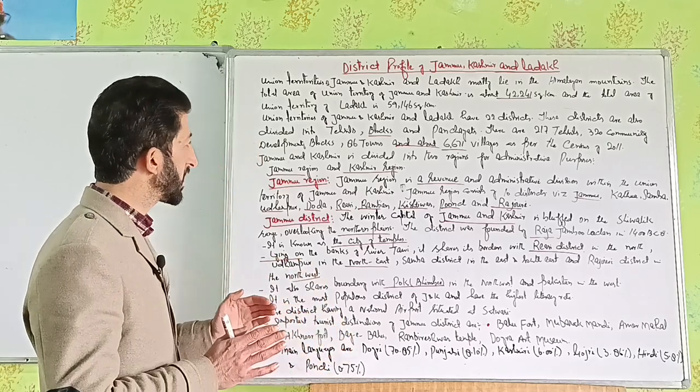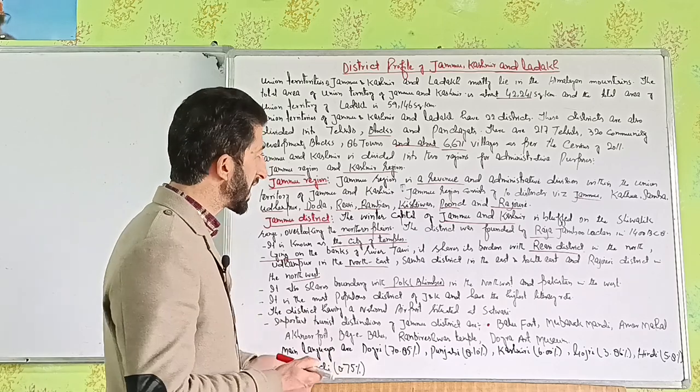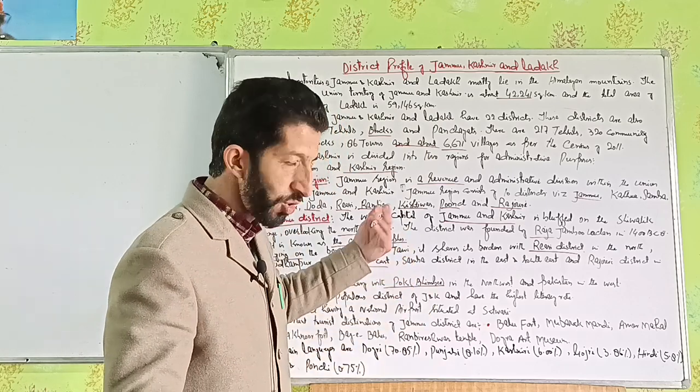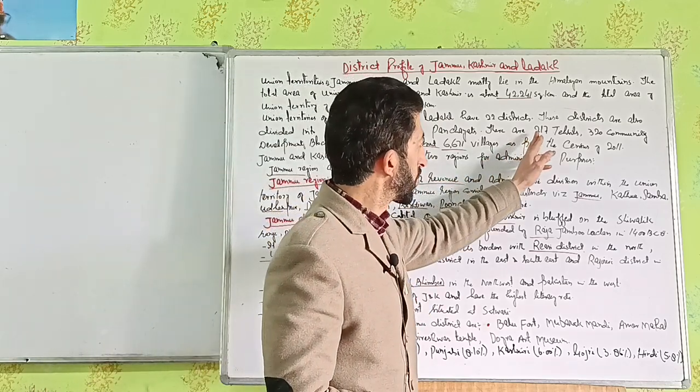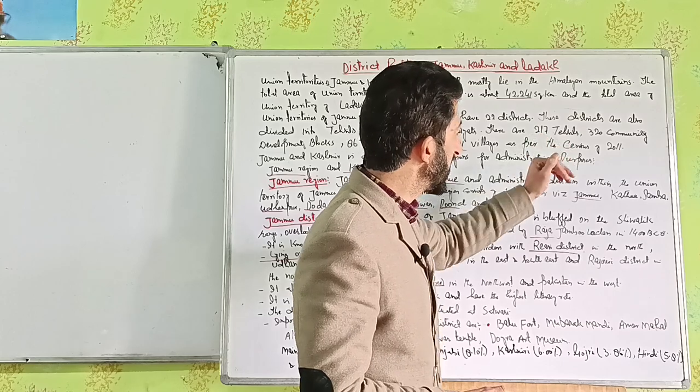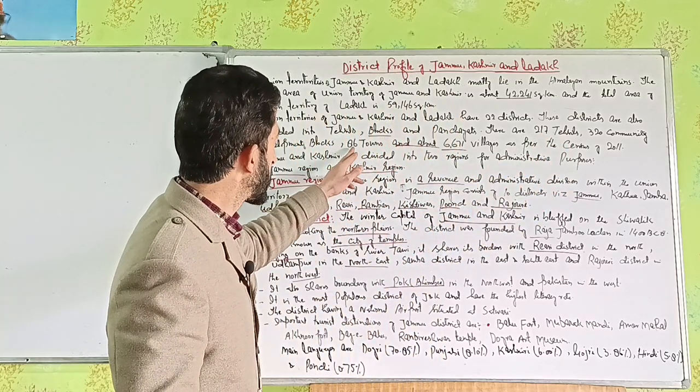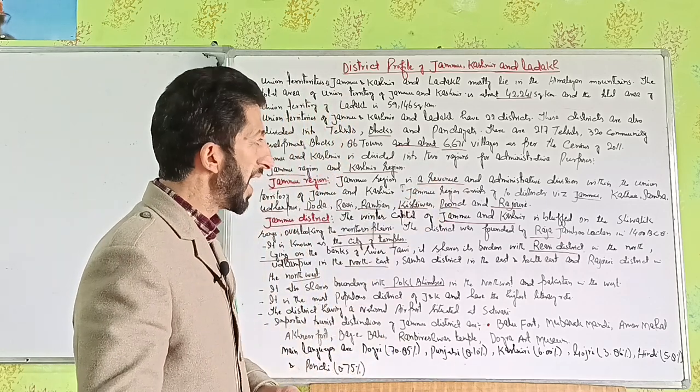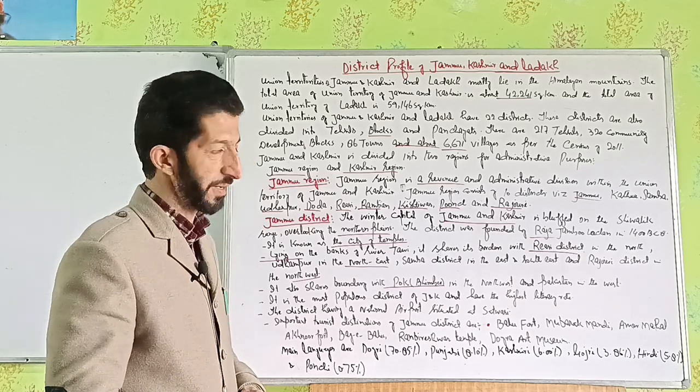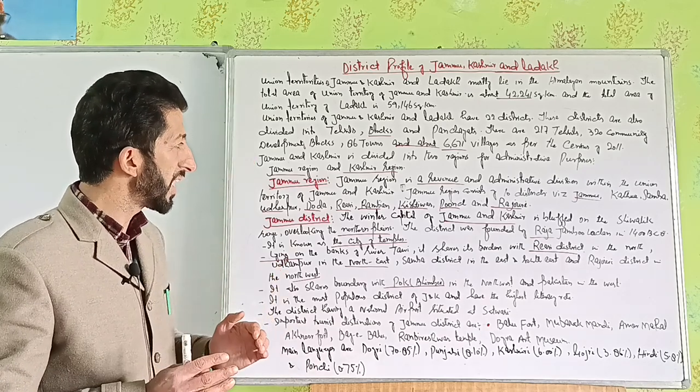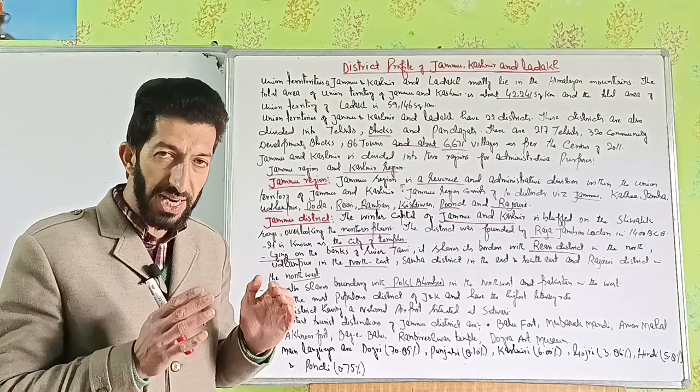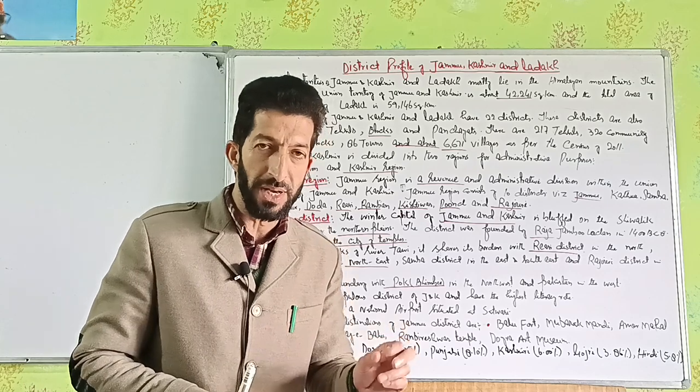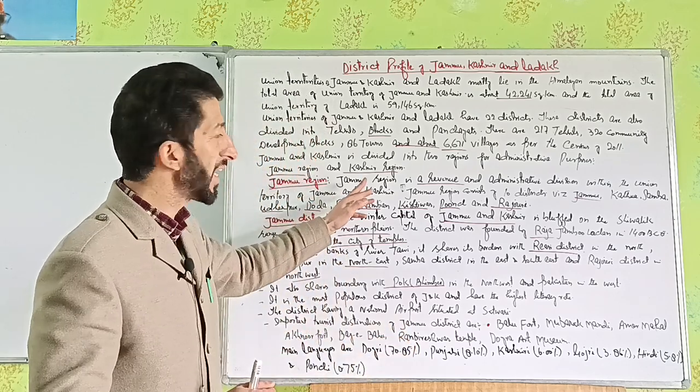The districts are divided into Tehsils, blocks, and Panchayats. The total is 217 Tehsils, 320 blocks, 86 towns, and about 6,671 villages as per the census of 2011. Jammu and Kashmir and Ladakh are divided for administrative purposes into two regions: Jammu region and Kashmir region.